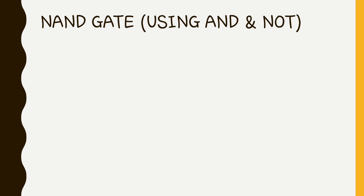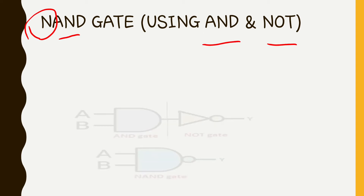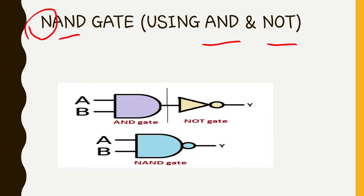When we look at the NAND gate, we will see it is created using AND and NOT. We will use the basic AND gate and NOT gate. Looking at this diagram, we have AND gate with two inputs A and B, and then we have the NOT gate applied.